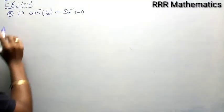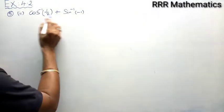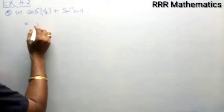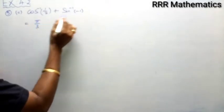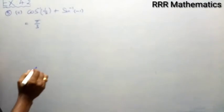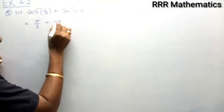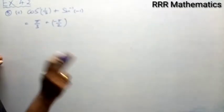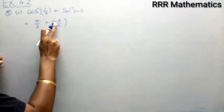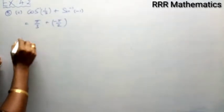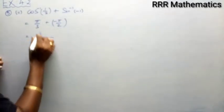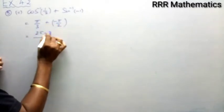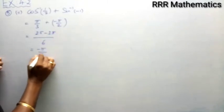Now the second part from the same problem: cos inverse of half plus sin inverse of minus 1. Cos inverse of half — 1 by 2 comes at 60 degrees, so it equals pi by 3. For sin inverse of minus 1: sin of minus 90 degrees equals minus sin 90, and sin 90 gives 1, so sin inverse of minus 1 equals minus pi by 2, which lies in the principal value range. Taking LCM of 6 and simplifying: 2 pi minus 3 pi, giving us minus pi by 6.